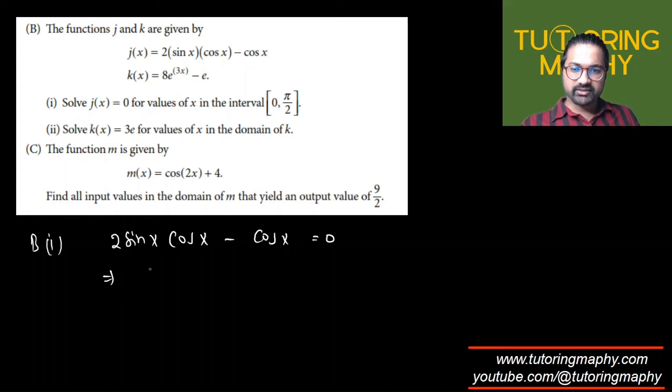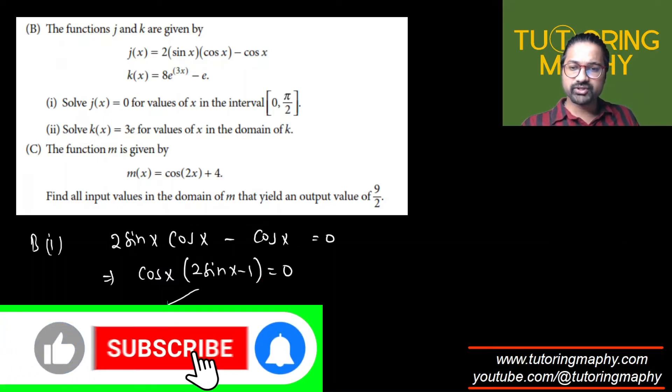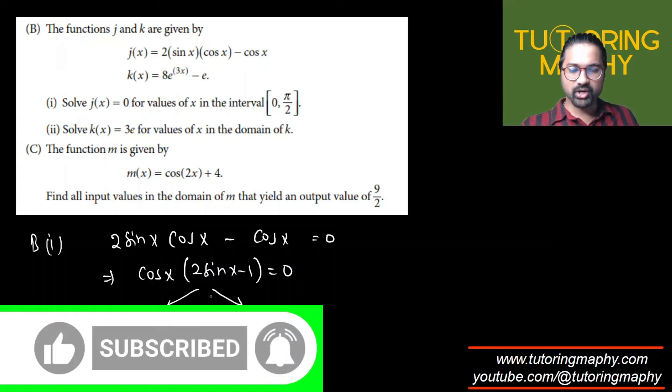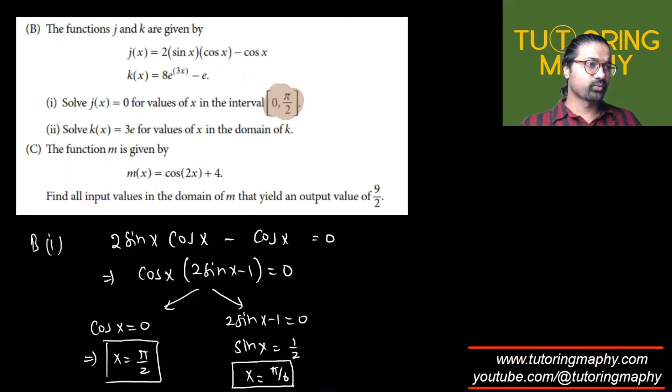I'm going to take cosine x as a common factor and write this as cos(x)(2sin(x) - 1) = 0, which gives us two possibilities because this is a zero product property. This means that either cos(x) = 0, or 2sin(x) - 1 = 0. Cosine is 0 when x is π/2. Here if we isolate sin(x) then sin(x) is 1/2, and from here I know this is going to be 30 degrees or π/6. So these are the two possibilities, only two solutions where j(x) equals 0.